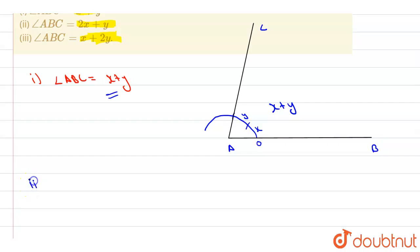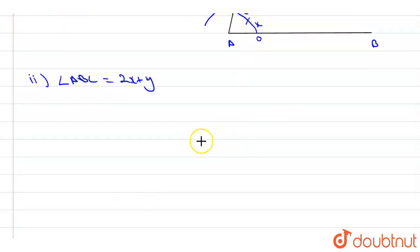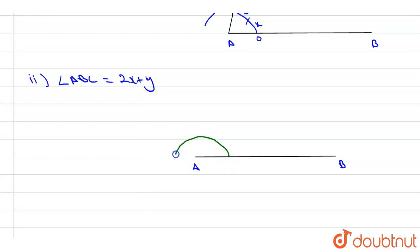Now we make the second angle ABC equal to 2x plus y. Take a line AB, from B draw an arc of your choice, and from the starting of the arc cut an arc measuring x.